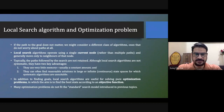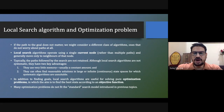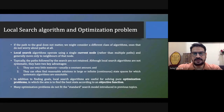Local search algorithm is very useful for problems which have a large state space. A large state space means we need more memory — for example, NP-hard problems where the memory required is exponential. For those types of problems, local search algorithm is useful. We then talked about the objective function for the optimization problem: what value we have to achieve.